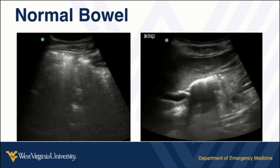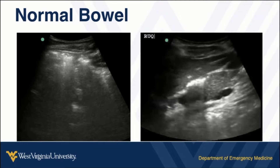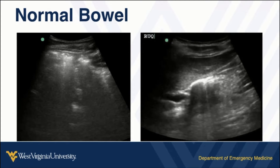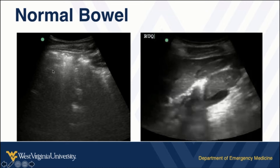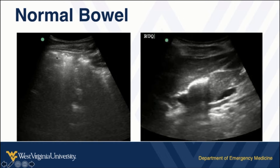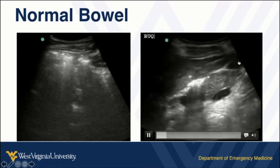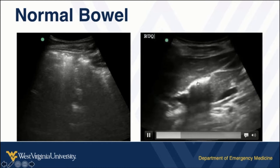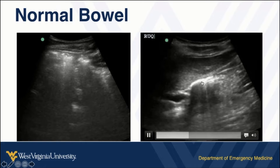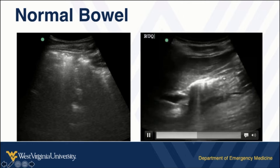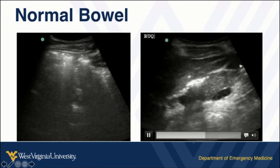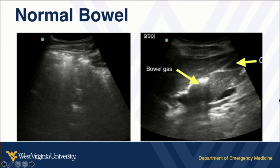Just a few things about what normal findings may look like. Normal bowel is going to be filled with air, so you're going to get this air signature where you get these bright white little bubbles and these streaky artifacts. Over here you can see this is bowel gas — that's air with streaky artifact. This is the gallbladder up here, so don't mistake this for a gallbladder full of stones, because that's an air signature with those streaky artifacts, separately identified from the gallbladder.